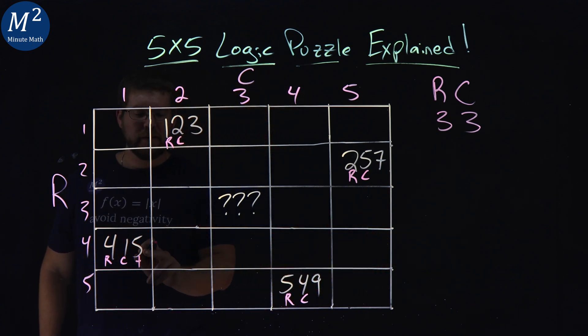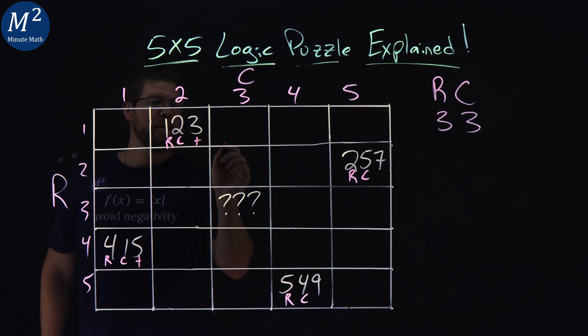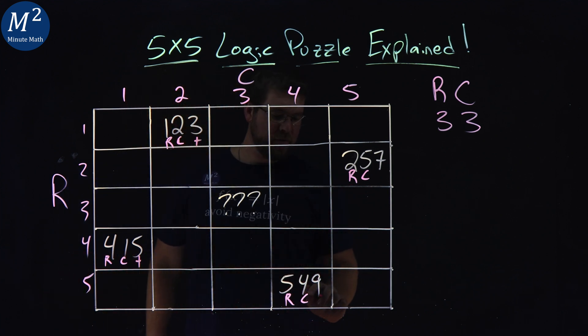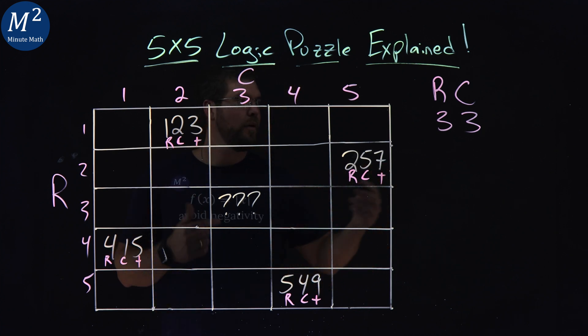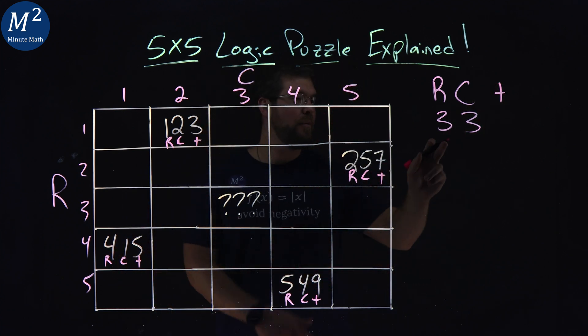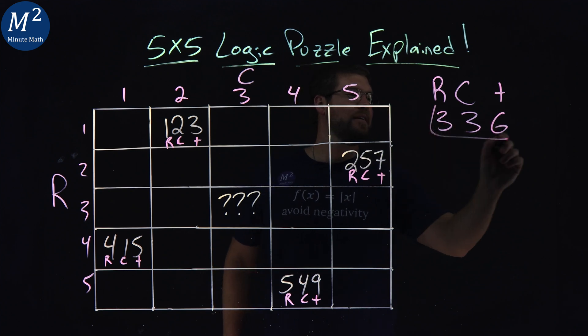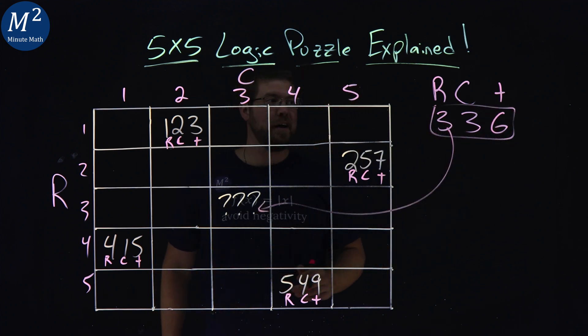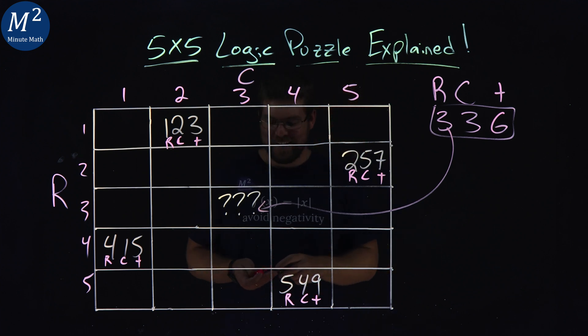Addition here. 4 plus 1 is 5. 1 plus 2 is 3. 5 plus 4 is 9. 2 plus 5 is 7. So last one's addition. We add them up. 3 and 3 make 6, and there's our missing square value: 336.